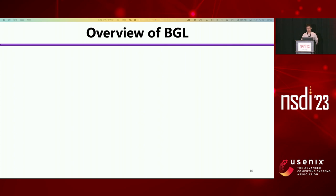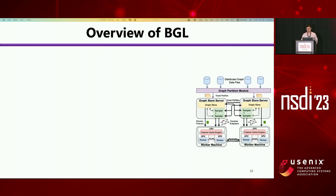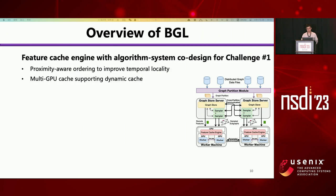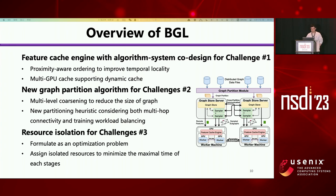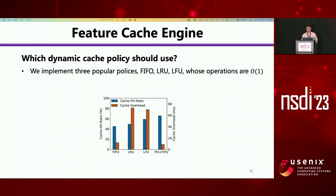To address these challenges, we propose a novel system named BGL. For the first challenge, BGL adopts a new feature cache engine with algorithm-system co-design. For the second challenge, we propose a graph partition algorithm that uses multi-level coarsening to reduce the size of the graph. For the third challenge, we propose profiling-based resource isolation, formulated as an optimization problem that assigns isolated resources to minimize the execution time of each stage.